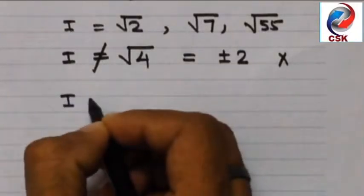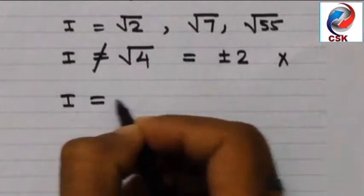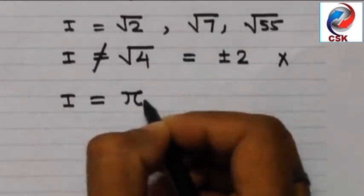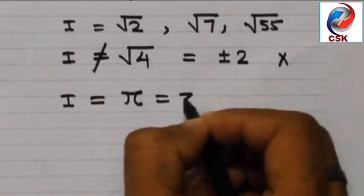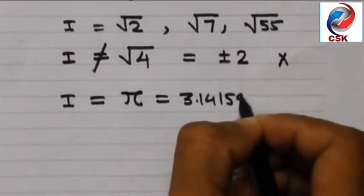My dear students, let's take another example. i is equal to pi. The value of pi is 3.14159 and so on.